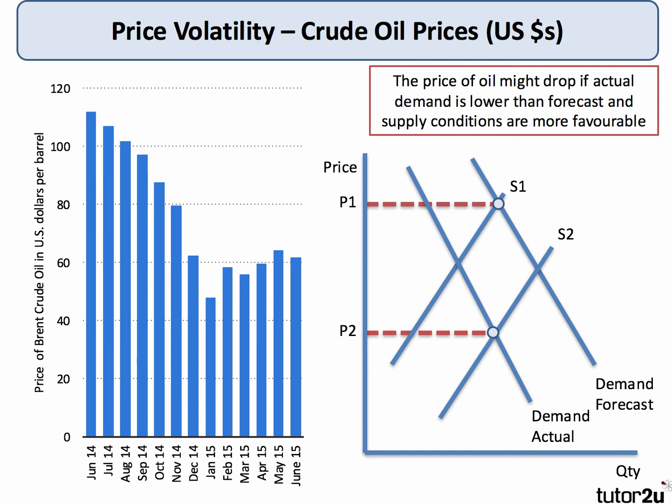How do we show all this using supply and demand diagrams? We're trying to show a fall in the price of oil. One factor could be a big increase in supply — I've shifted the supply curve out from S1 to S2, as major oil producers ramped up their production. You can also get a fall in price if actual demand is less than forecast demand — for example, a country like China grows more slowly, or there's a recession in Europe. A combination of an outward shift of supply and lower-than-forecast demand causes a significant fall in price from P1 to P2.